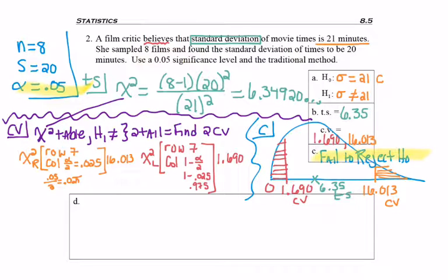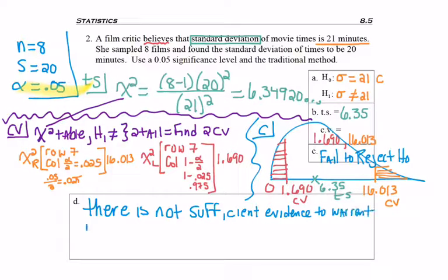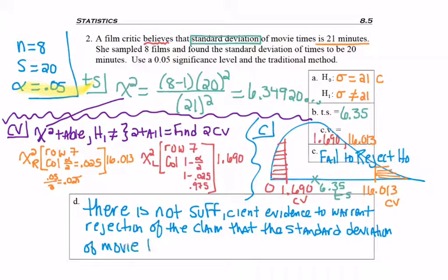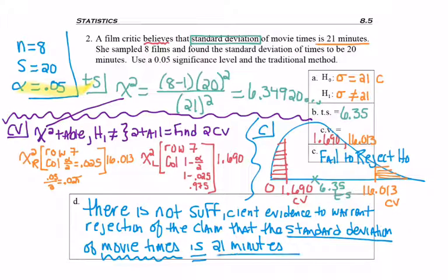Since I fail to reject H0 and my claim is H0 of the null hypothesis, my statement starts off, there is not sufficient evidence to warrant rejection of the claim that the film critic believes that the standard deviation of movie times is 21 minutes. The standard deviation of movie times is 21 minutes, and that's all I really needed. Don't forget, I'm looking that you listed the population parameter standard deviation context, meaning what's the standard deviation measuring, and in this case it's movie times. The claim about that standard deviation, it is, and if you want to write is equal to, that's fine, and it is equal to what? 21 minutes.